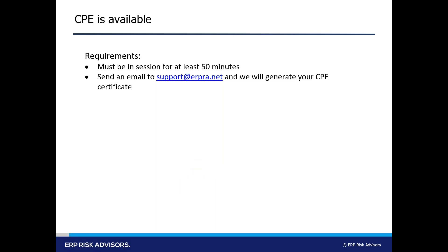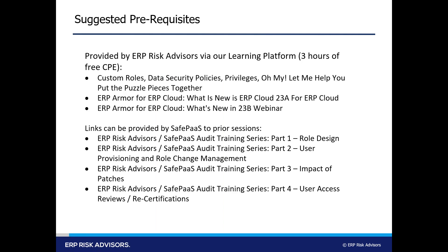This webinar is available in the live session for CPE. You need to be available and actively participating for 50 minutes of the hour we're going through topics today. If you're interested in getting a CPE certificate, you can email us or open a ticket at support@yourPRA.net and we will send you a certificate in response. We've put prerequisites up in past webinars and have now added part four of the series. Eventually we'll package all these together and let you have access to the logins, or you can reach out to the SAPAS team for any particular URL to these training classes or recorded webinars.